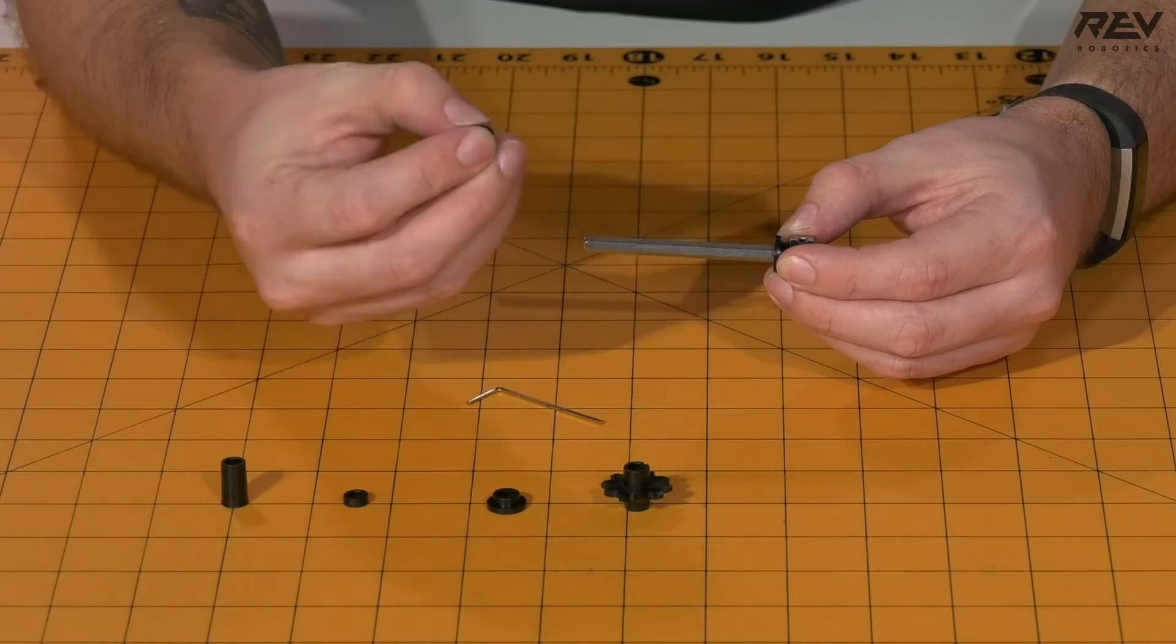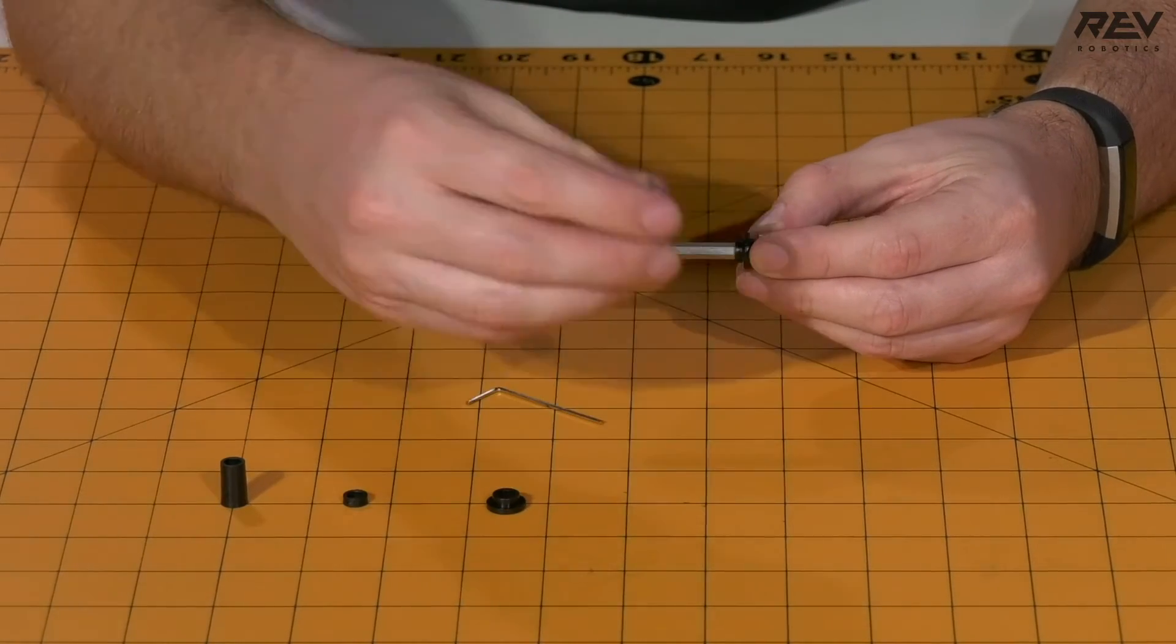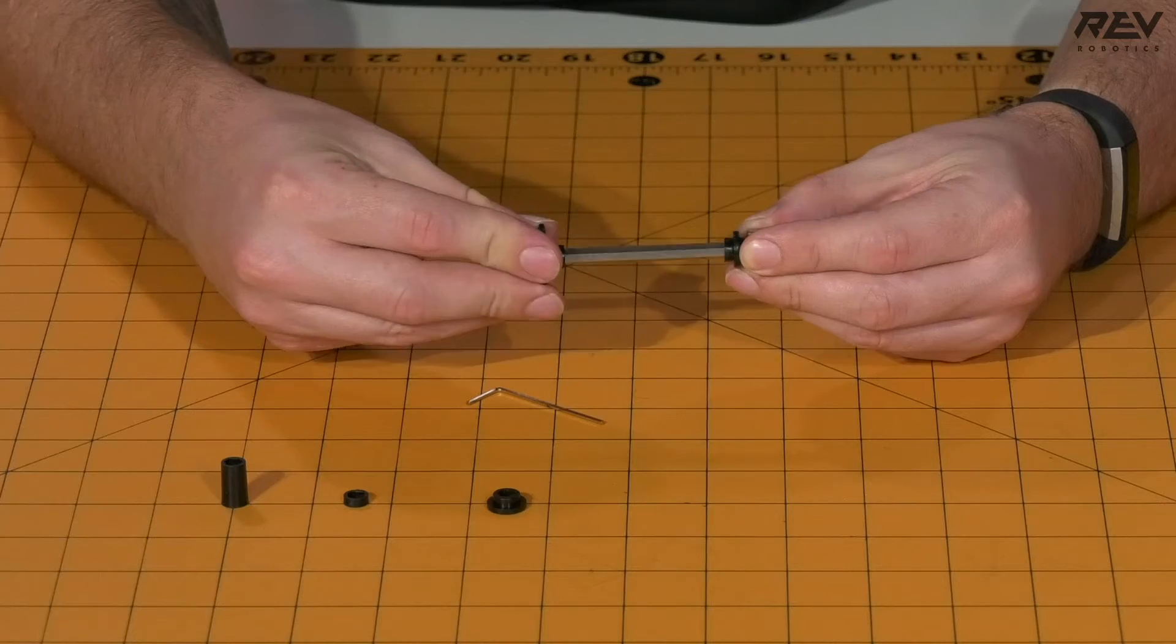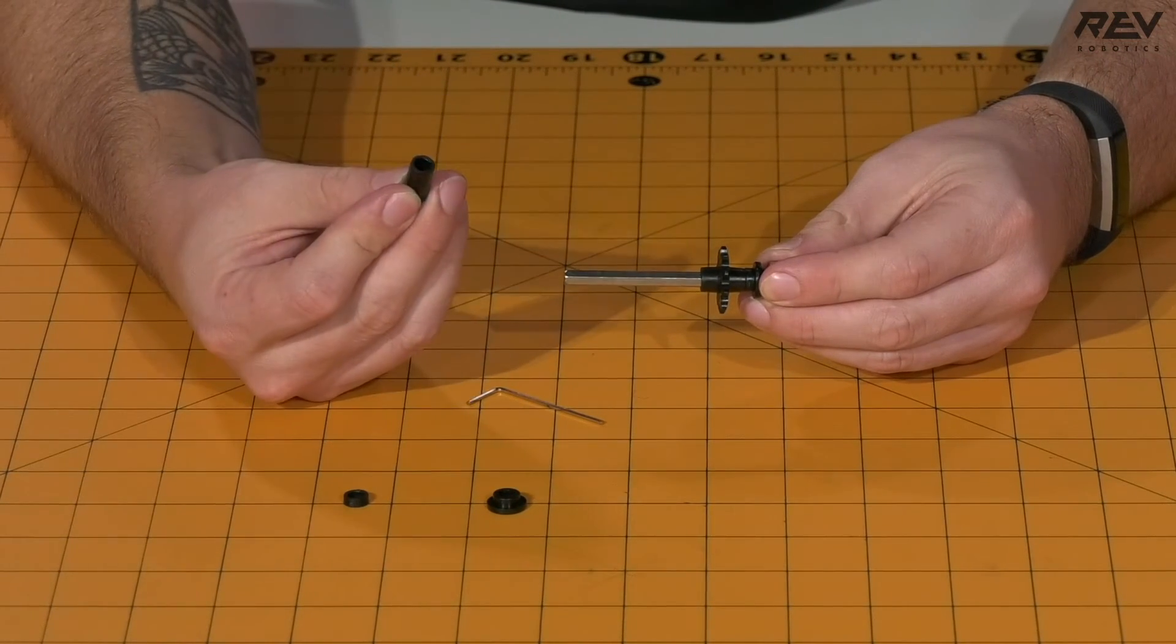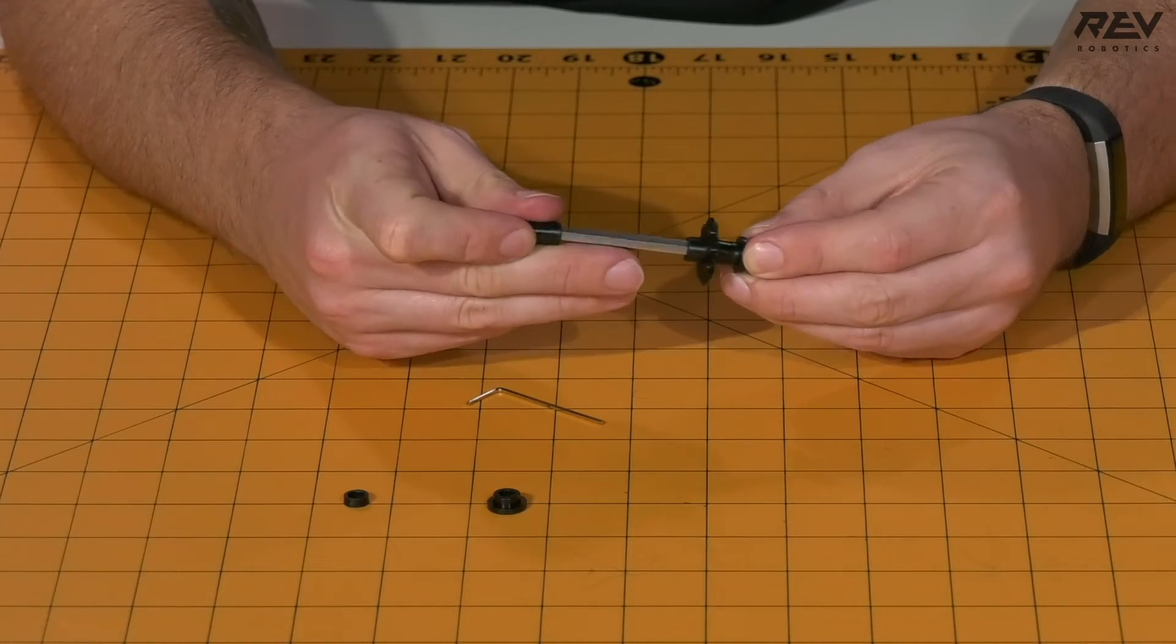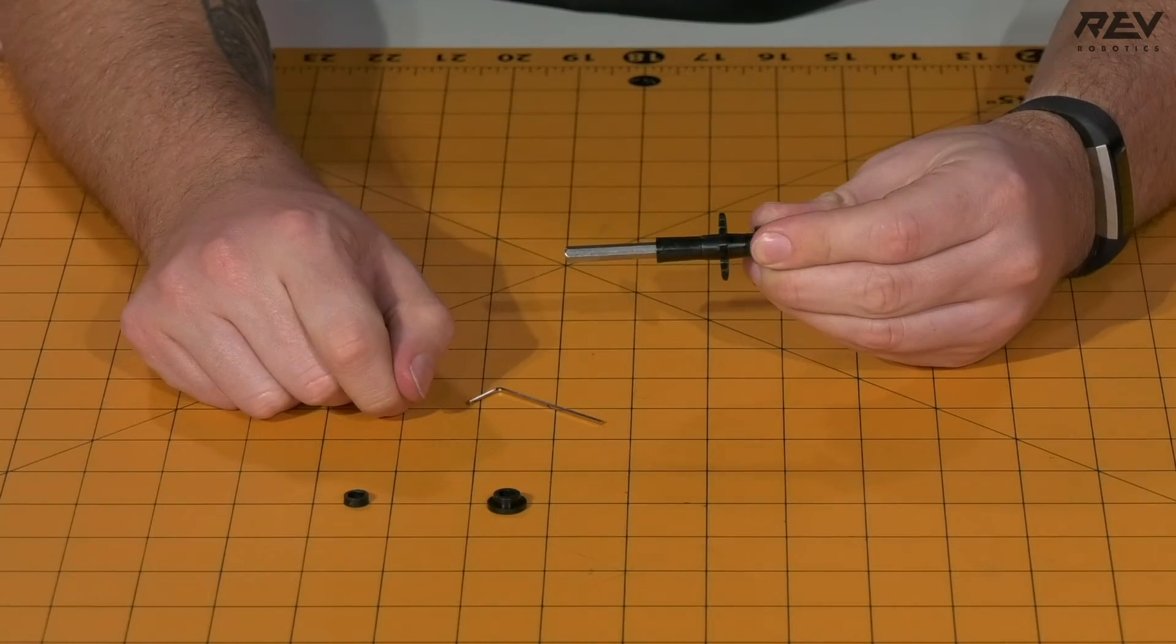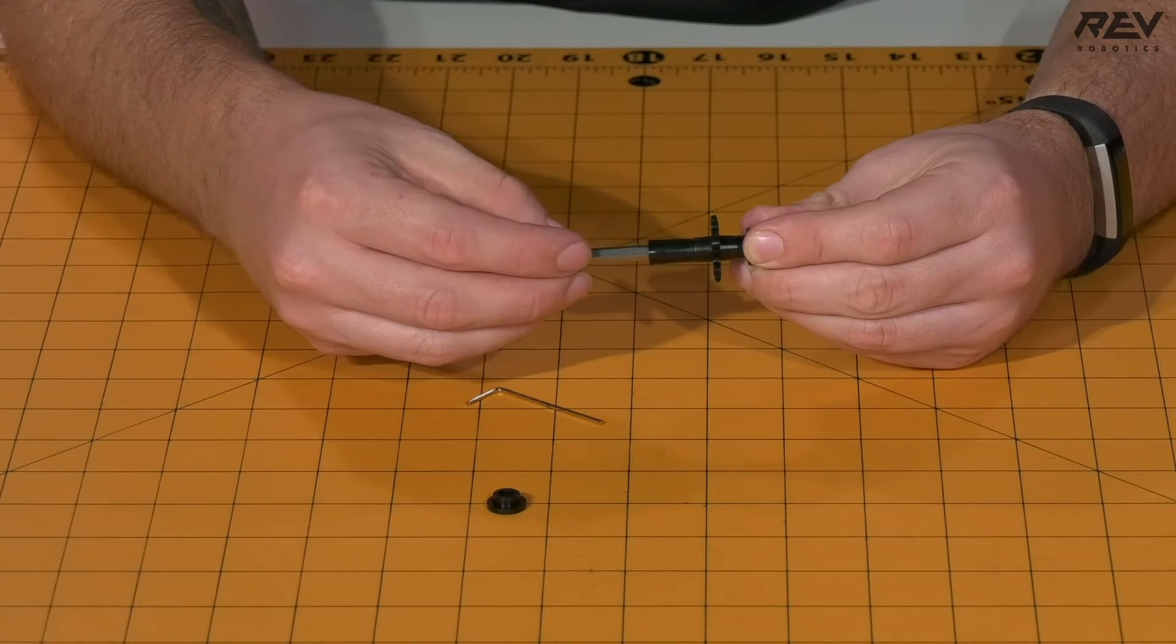Next, take a 3 millimeter spacer and slide it on, followed by your 10 tooth sprocket. Then take your 15 millimeter spacer and slide it onto the end of the shaft, followed by your 3 millimeter spacer.